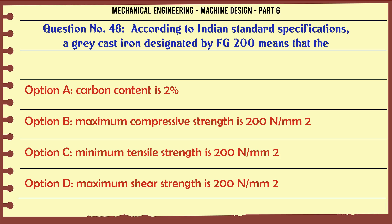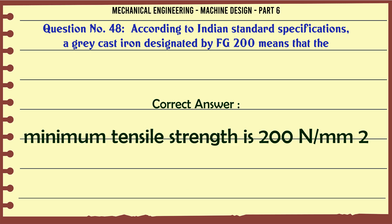According to Indian standard specifications, a gray cast iron designated by FG200 means that the: A) carbon content is 2%, B) maximum compressive strength is 200 N/mm², C) minimum tensile strength is 200 N/mm², D) maximum shear strength is 200 N/mm². The correct answer is minimum tensile strength is 200 N/mm².